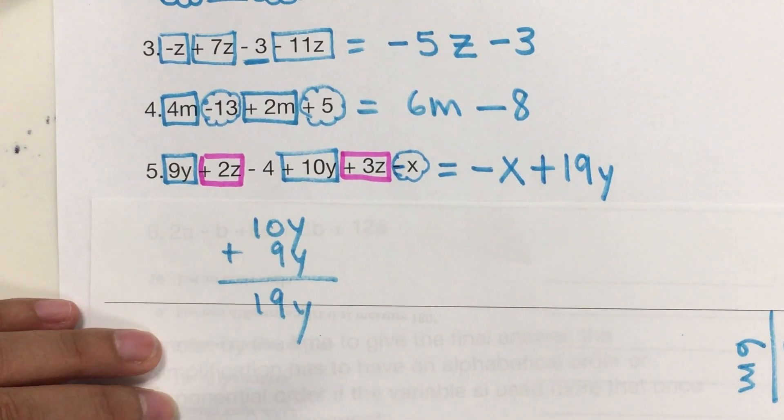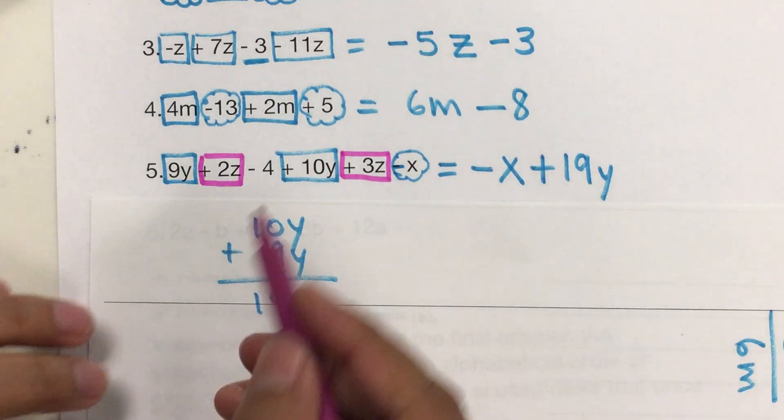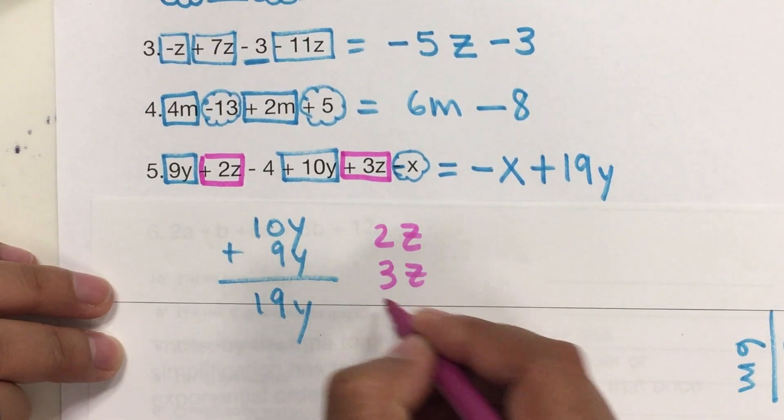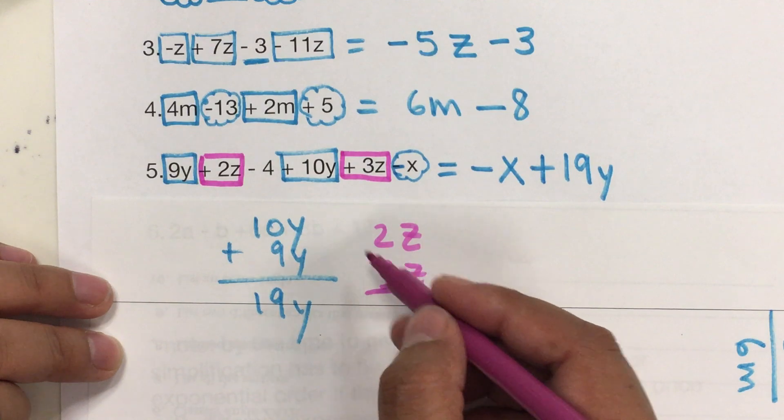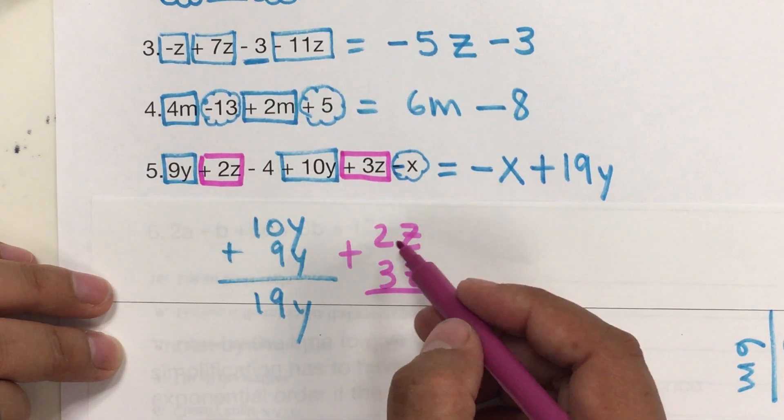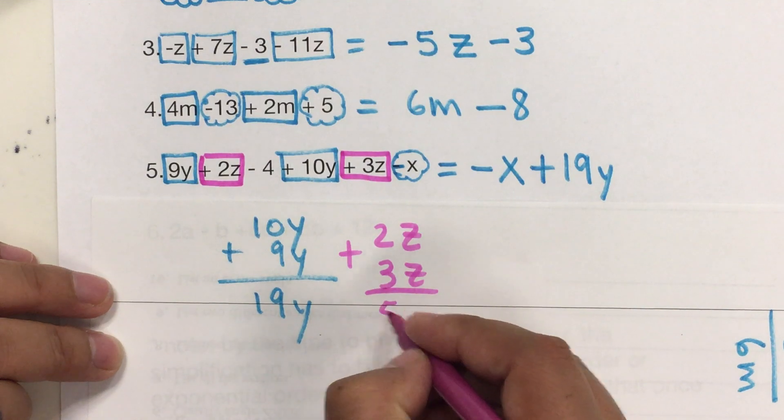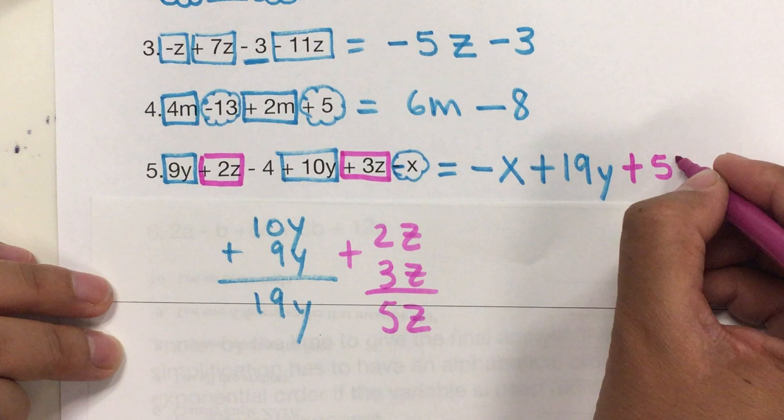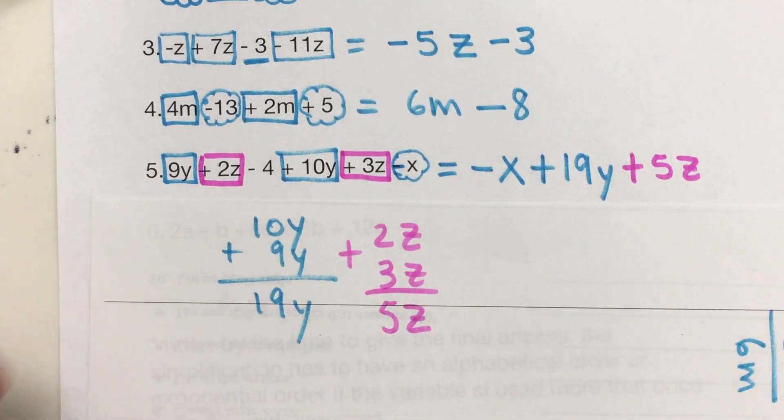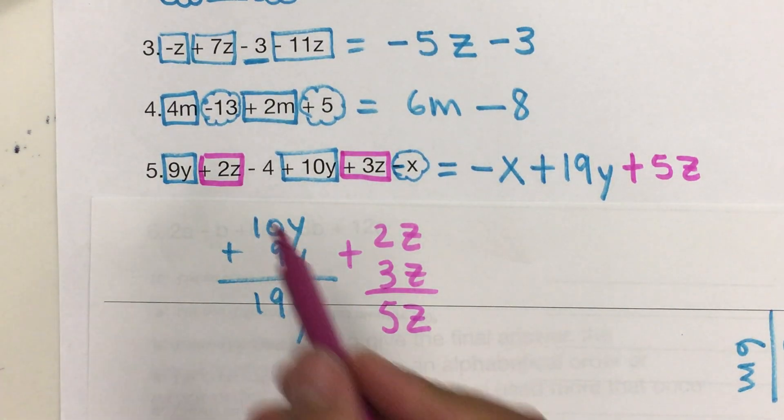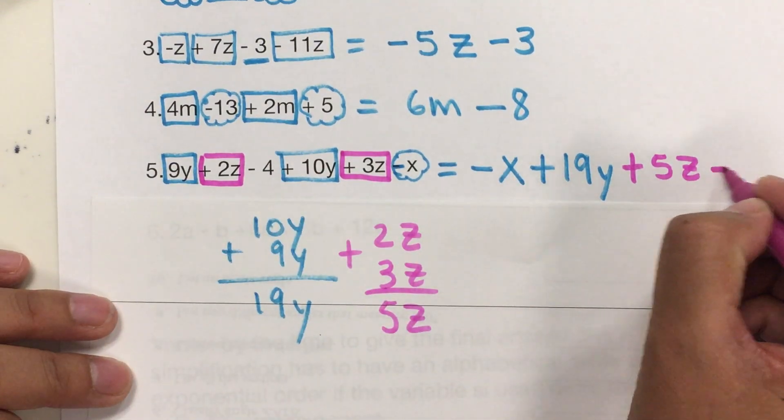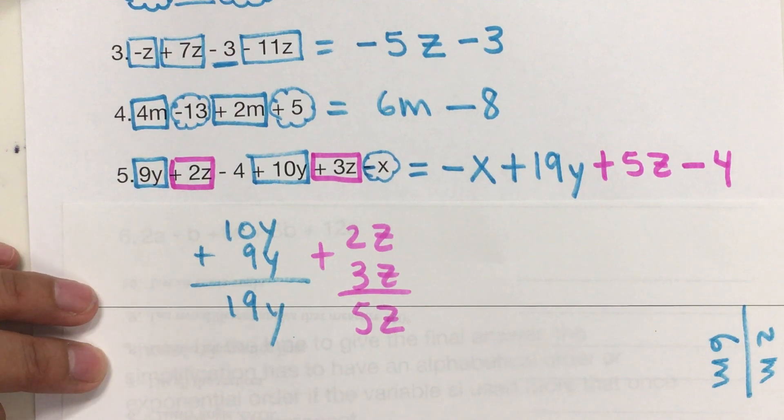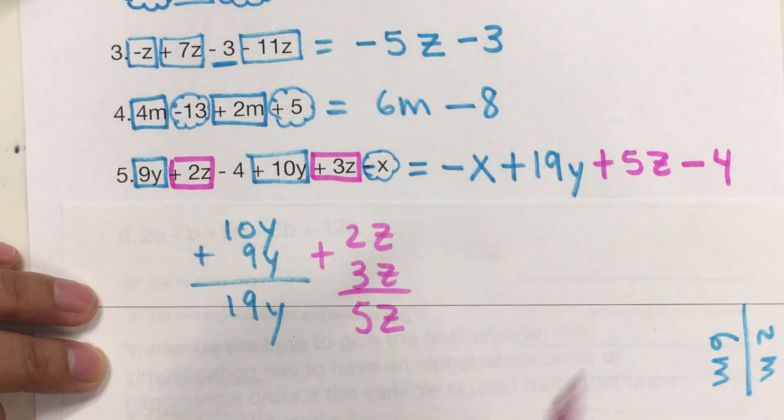The next one is Z. And so, I have 2Z and 3Z. So, again, both are positive. I add. And 2 plus 3 is 5Z. So, I'm going to put plus 5Z. And the last one is the negative 4. The constant number goes at the end by itself. So, we end up with a quadrinomial.